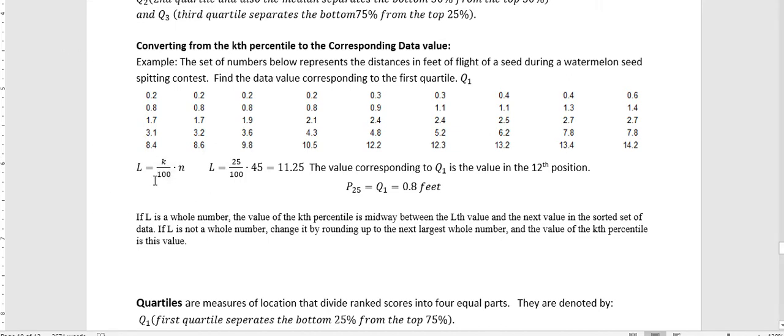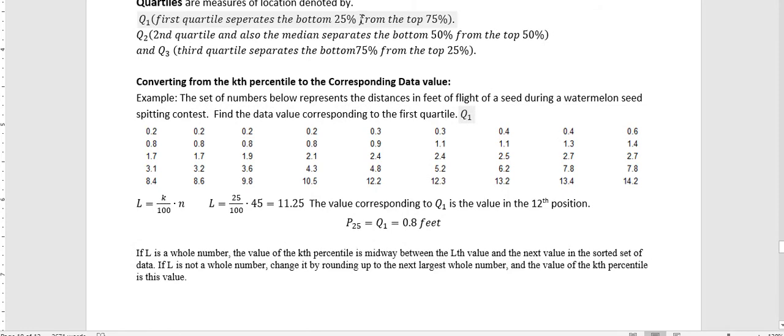So that's when we're going to use this L equals k over 100 times n. L is the location of that data value. When we're asking for the first quartile, we're asking for the 25th percent because that's what the quartile represents is the 25th percentile. So we take our 25 as our k, that's the percentile in question, and divide by 100, and we multiply by n, which is the number of data values. It's the same set we used before, so we still have 45 data values. 25 divided by 100 times 45 is 11.25.